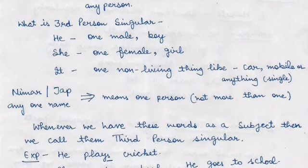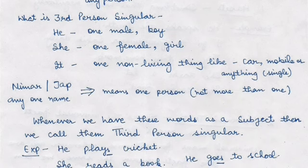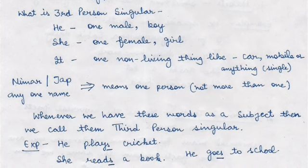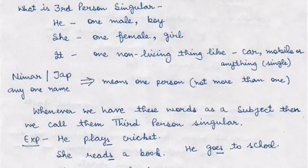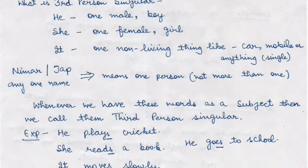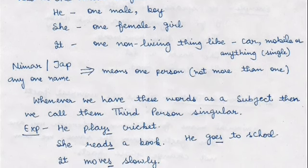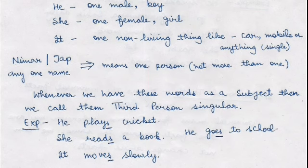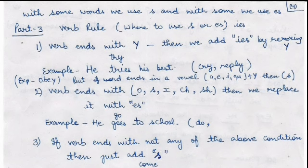For example: 'he plays cricket' — 'he' is a single boy, so we add S to the verb 'play', making 'plays'. 'She reads a book' — S added to 'read'. 'It moves slowly' — S added to 'move'. 'He goes to market' — ES added to 'go'. As you can see, with some verbs we use S and with others we use ES.